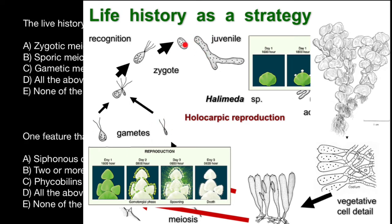Through the process of mitosis, a juvenile would be formed, which then grows into the adult form. So as you can see, this life cycle is gametic meiosis.